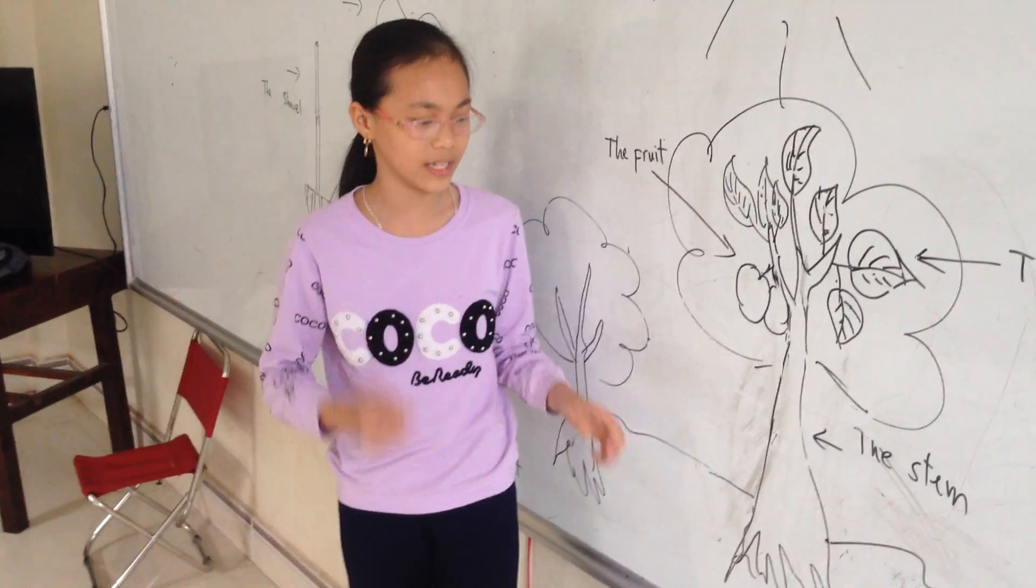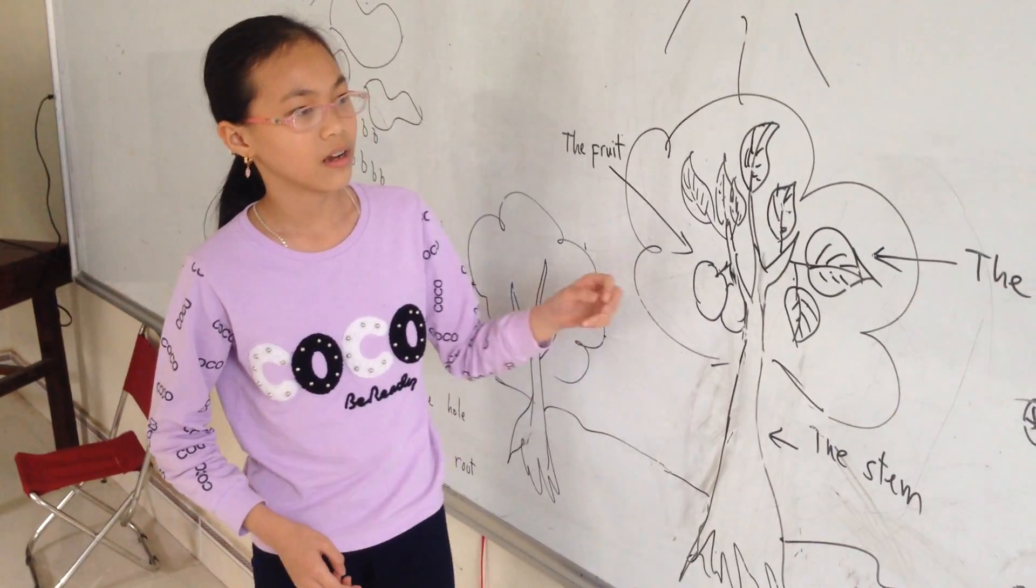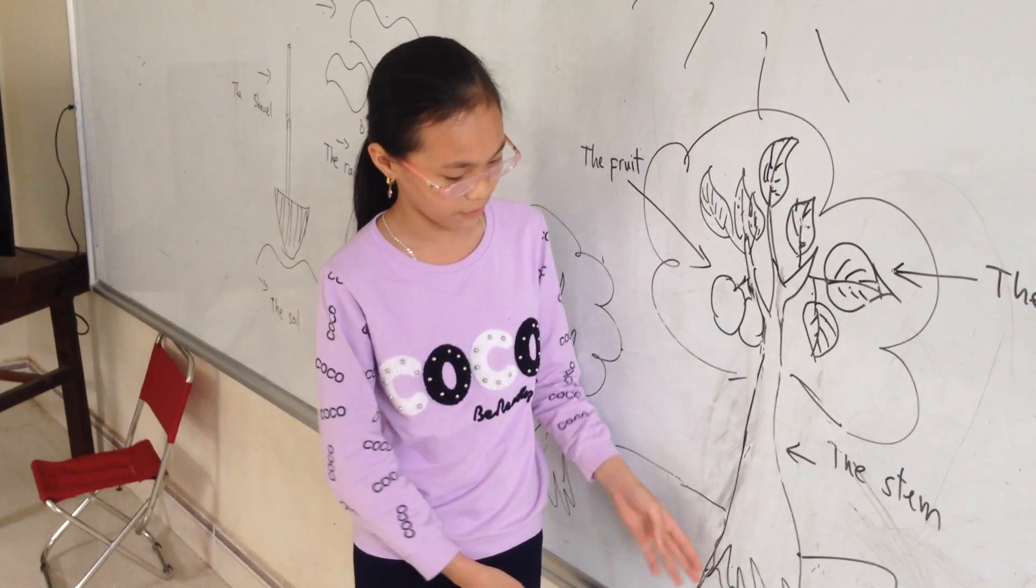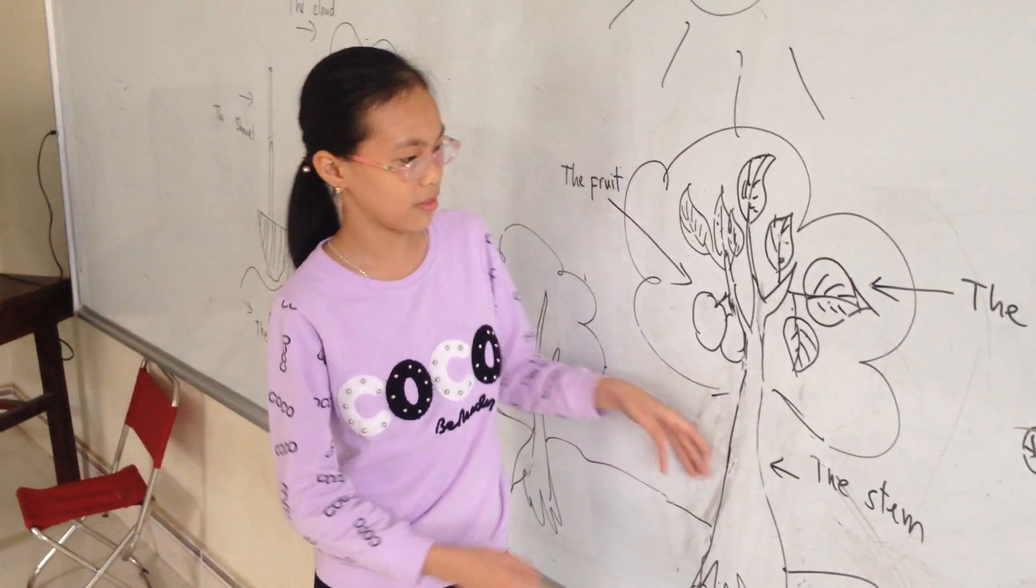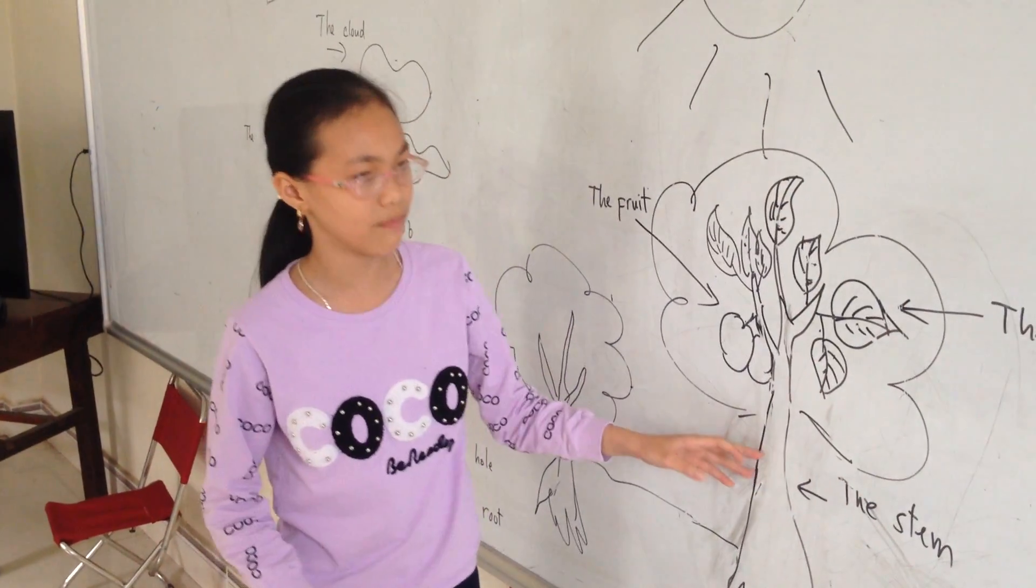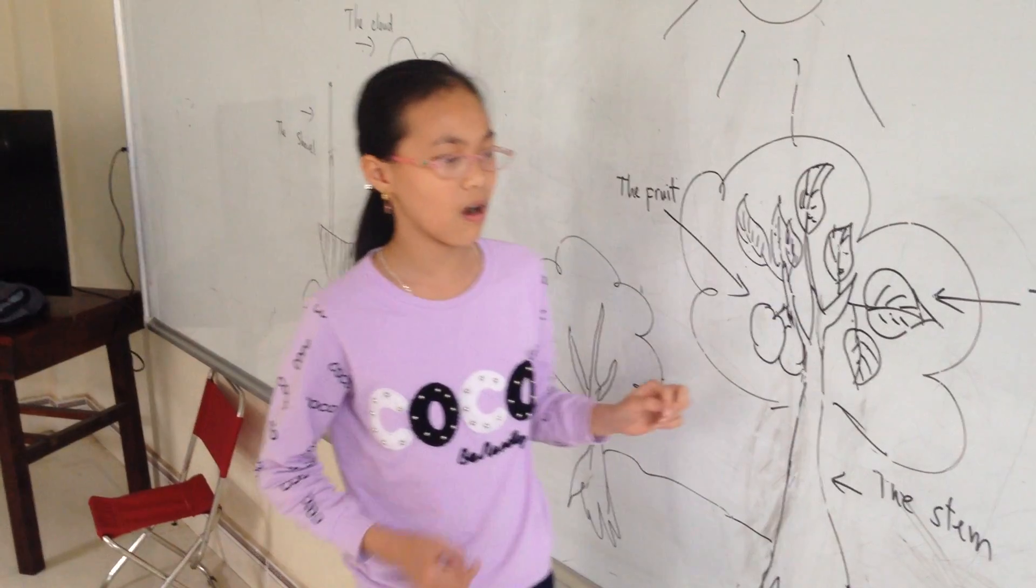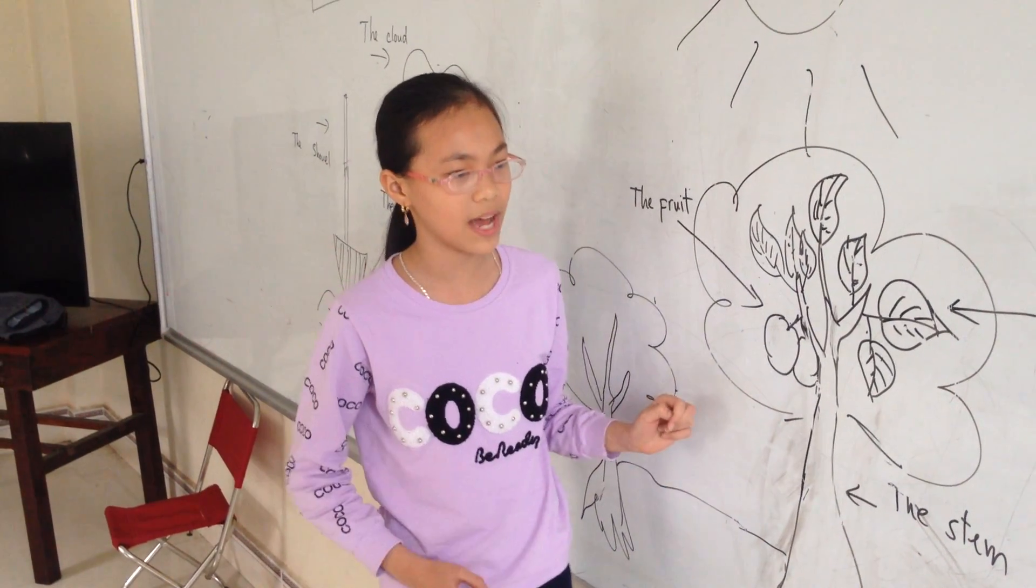The second part is the stem. It moves water from the root to the other parts of the plant. It also supports the plant.